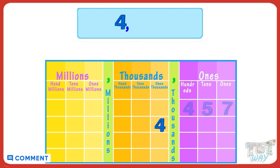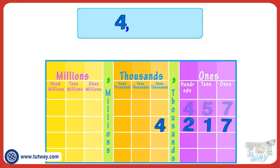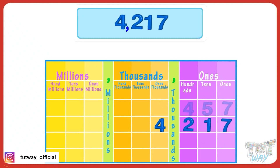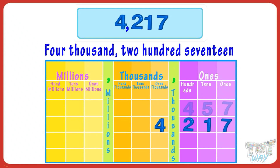So read it as four thousands and place a comma after 4. Now 2, 1, 7 are in the ones period. Read them according to their place values: 4,217. So our number will be written and read as 4,217.